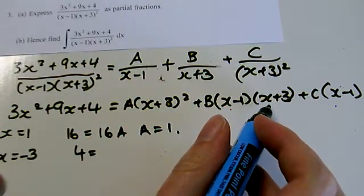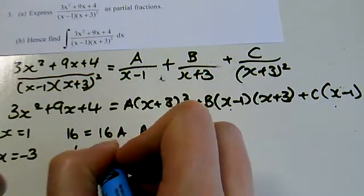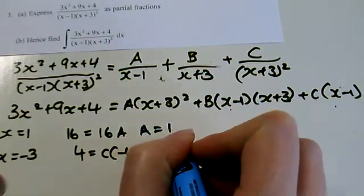This bracket cancels, this bracket cancels, which makes those two terms 0. So I've just got C lots of minus 4, which means C is minus 1.